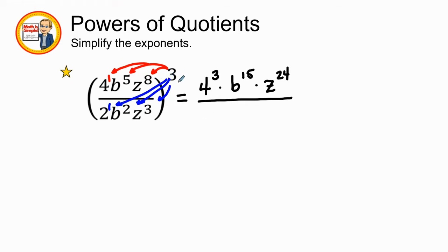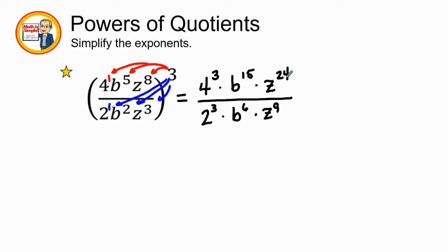One times three is three, so it's going to be two to the third power. Two times three is six, so b to the sixth power, and three times three is nine, so it'll be z to the ninth power. Now it seems like we have larger numbers, but we got rid of the parentheses, which was the main thing. Now we go back to how do we divide exponents that are in a fraction.